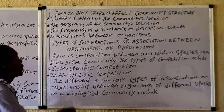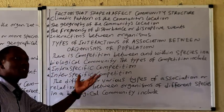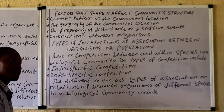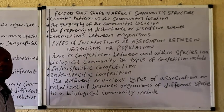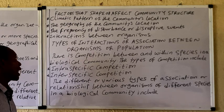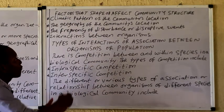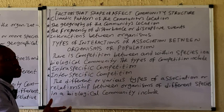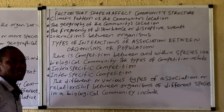We also have geographical location as a factor — some terrains such as mountain regions are difficult for certain animals to inhabit. We also have the frequency of disturbance, or what we call destructive events, which can affect community structure.